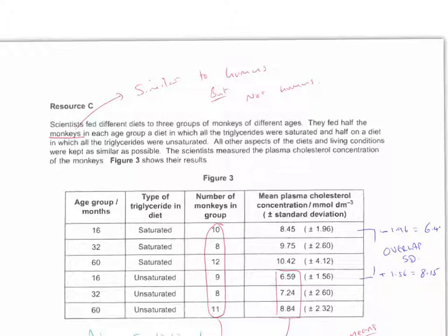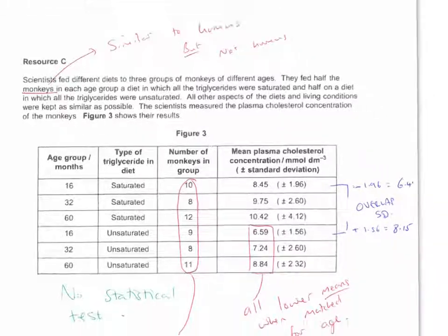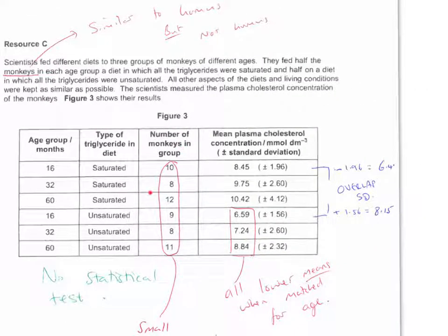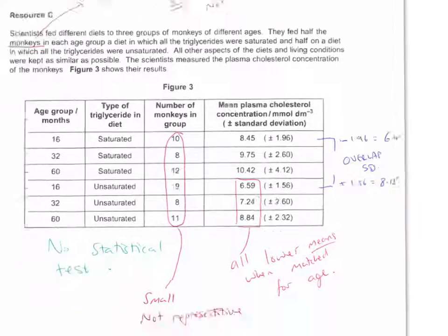So let's look at what we can take from the next resource. We can see we're using monkeys, so they're similar to humans, but they're not humans. They're similar to monkeys, so you can say they might have a similar response. But they're not humans, so you could also say they have a different response to humans.